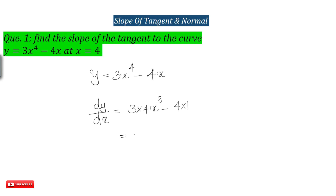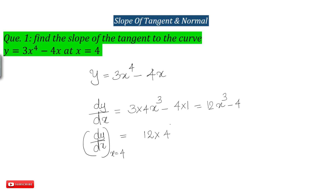Now the slope of the tangent is dy by dx at x equal to 4. Substituting x equal to 4: 12 into 4 cube minus 4, that is 12 into 64 minus 4, which gives 768 minus 4. So the slope of the tangent is 764.